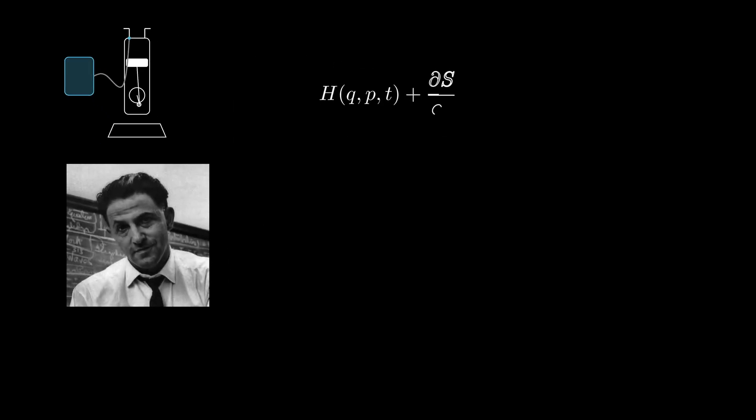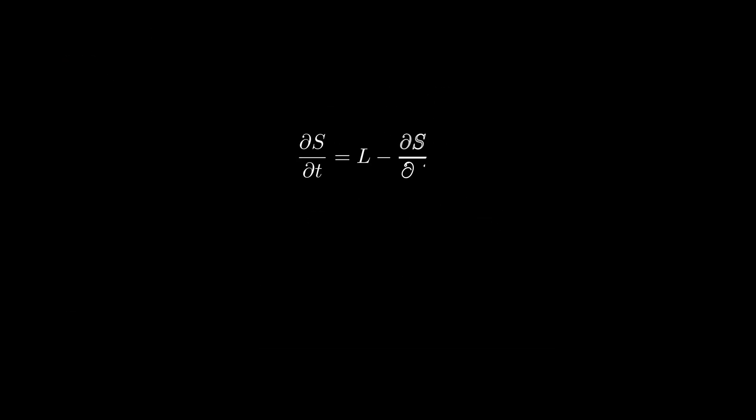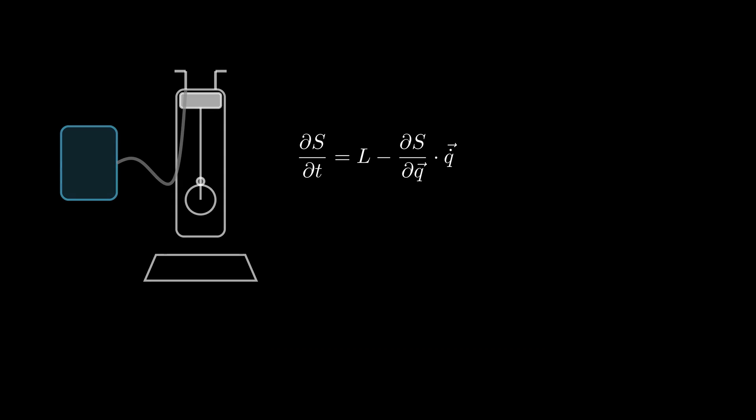This concept is how Richard Bellman extended the Hamilton-Jacobi formalism of classical mechanics into a wider version called Hamilton-Jacobi-Bellman. To see how this transition happens, let's get back to the Hamilton-Jacobi formalism of classical mechanics that we discussed earlier. Now, remember the example of the car engine and fuel delivery system that we discussed before.